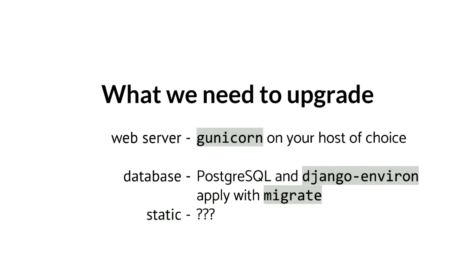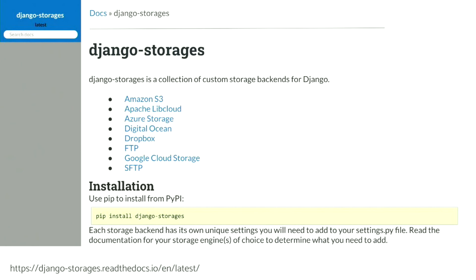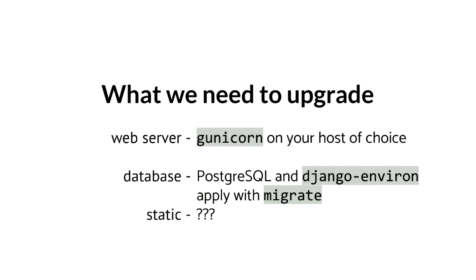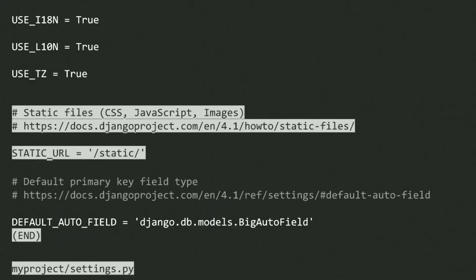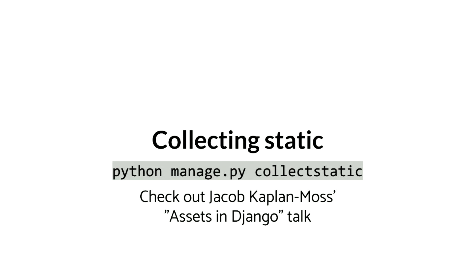I'm running well over time — do not use me as a reference on how to give good talks. For static, your hosting provider of choice is going to have an option, and you're probably going to want to use Django Storages, which supports a number of different hosting providers. All you have to do is pop something around your STATIC_URL to reference whatever settings you need. Jacob Kaplan-Moss did a talk called "Assets in Django Without Losing Your Hair" — I just cut mine off — and his talk covers when to run collectstatic.